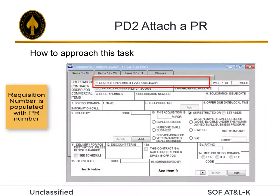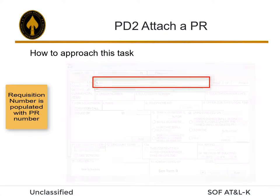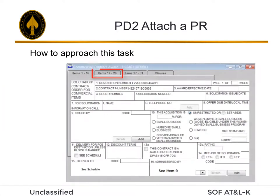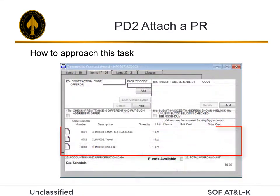The requisition number is now populated with the PR number. Click the Items 17 through 26 tab. The line items are now displayed on your document.